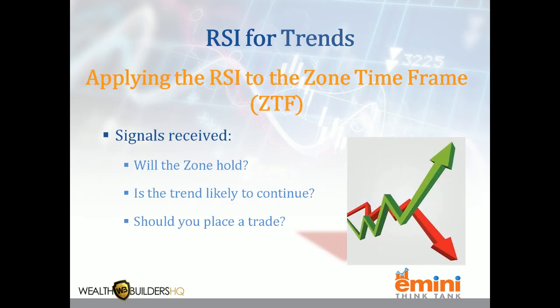When it comes to the RSI for trends, we apply this to the zone timeframe. It can help us when we're looking to enter in the direction of the trend or even sometimes counter-trend trades. The signals we receive are: will the zone hold? I need zones to hold if I'm going to be buying at a buy zone, expecting prices to bounce. It'll also let us know if that trend is likely to continue — in which case we do not want to go against that trend. It tells us whether or not we should even get into a position in the first place.